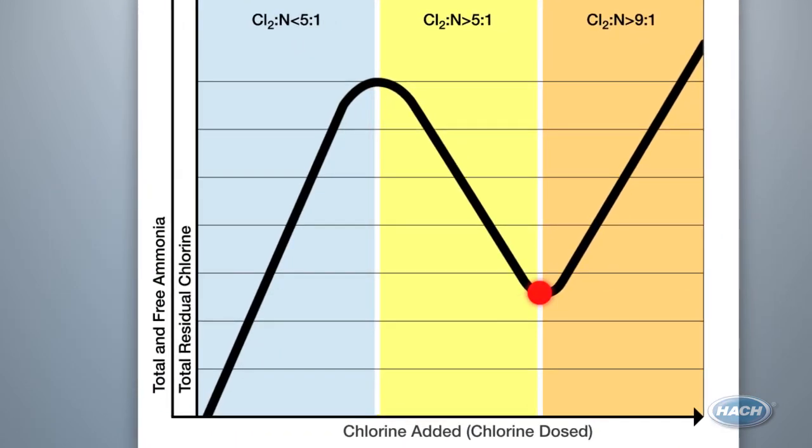Once you pass the point where you have fully bonded all the nitrogen from the ammonia with the chlorine, you return to the original chlorine curve, where for every part of chlorine you dose, you will see one part of chlorine residual.